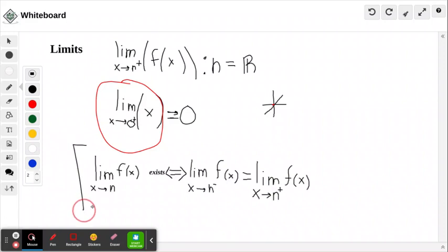There, right here, is your important fact that I paused to write. The limit as x approaches n of f of x exists if and only if, which is what this arrow's equally sign means,